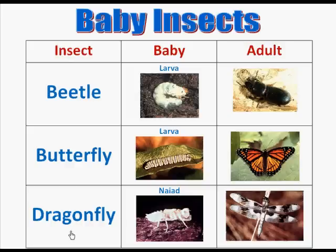Then we have a dragonfly. Here you can see a dragonfly, and their baby is called naiad.